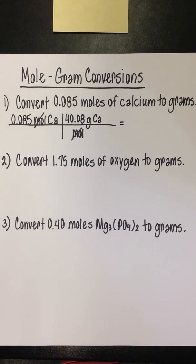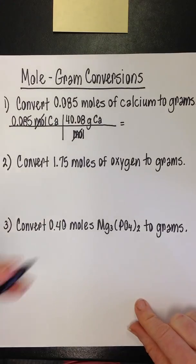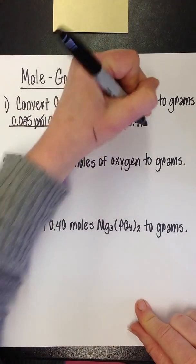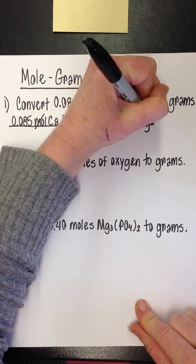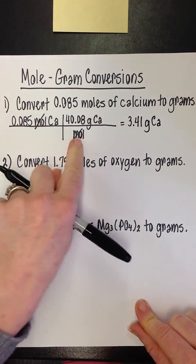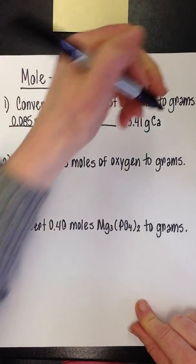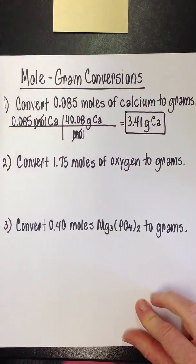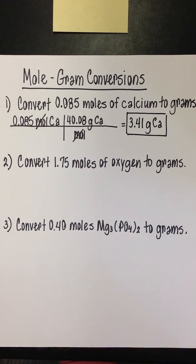So 0.085 times 40.08 is 3.41 grams of calcium. Because the bottom was literally just ones, you would be dividing by a one, so it's the same thing. For that reason, I'm not writing an intermediate step here.